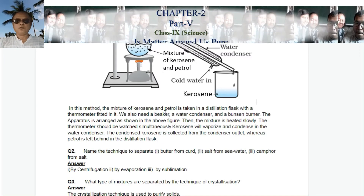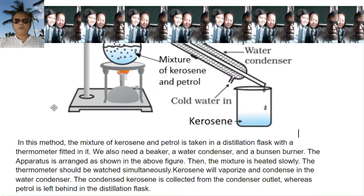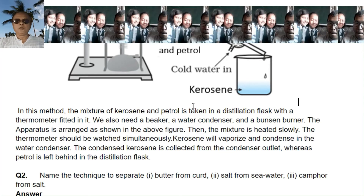In this method, the mixture of kerosene and petrol is taken in a distillation flask with a thermometer fitted in it. We also need a beaker, a water condenser, and a Bunsen burner, arranged as shown in the figure. The mixture is heated slowly and the thermometer is watched simultaneously. Kerosene will vaporize and condense in the water condenser. The condensed kerosene is collected from the condenser outlet, whereas petrol is left behind in the distillation flask. In this way we can separate the petrol and kerosene mixture.